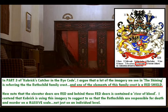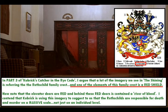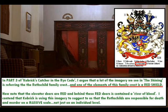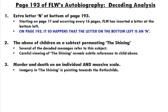In part three of Kubrick's Catcher in the Rye Code, I made the argument that much of the imagery in The Shining refers to the Rothschild Family Crest. One of the facets of that crest is a red shield, and the elevator doors can be thought of as red shields. With this image, Kubrick is accusing the Rothschild Family of being responsible for death on a massive scale — not just an individual scale. That is the third point.